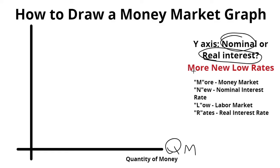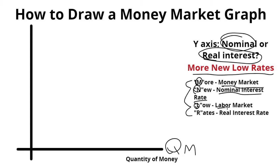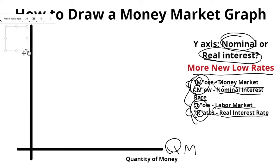I've already made a mnemonic for the y-axis on both money and labor markets. The mnemonic is 'More New Low Rates.' Taking the first letter of each word, we get MNLR. M stands for money market, N stands for nominal interest rates, L stands for labor market, and R stands for real interest rates. Money and nominal are grouped together; labor and real are grouped together. So using this acronym, we know the y-axis for the money market is nominal interest rates.